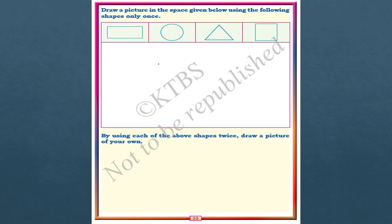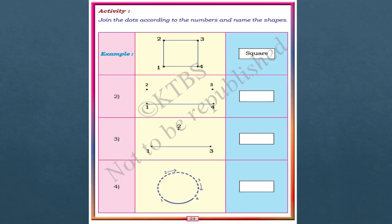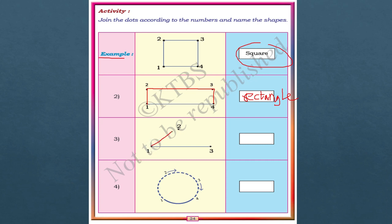You have to practice by drawing each shape in the space provided. There is one more activity: join the dots according to the numbers and name the shapes. For example, joining 1 to 2, 2 to 3, 3 to 4, then 4 to 1 gives a square. The same way, joining four points gives a rectangle. Joining three points — 1 to 2, 2 to 3 — gives a triangle.